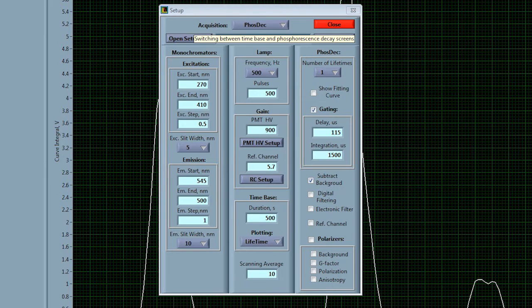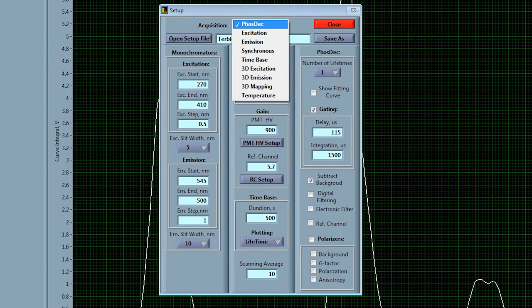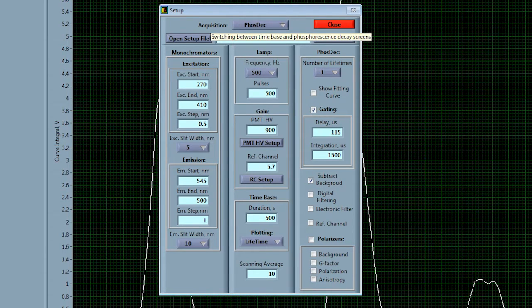In this case we want to actually acquire a phosphorescence decay which has been selected and we're going to excite at 270 nanometers and we're going to collect emission at 554. We've set the lamp frequency to run at 500 Hertz and in this case we've asked it to collect a decay that results from 500 flashes of that xenon lamp.